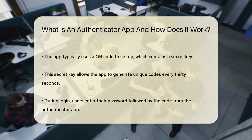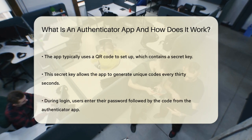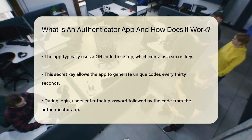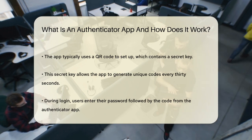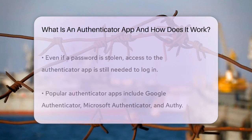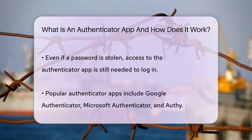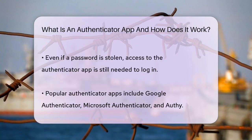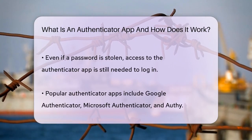When you set up an authenticator app, you typically scan a QR code provided by the service you are trying to secure. This QR code contains a secret key that the app uses to generate the one-time codes. The app will create a new code every 30 seconds based on this key and the current time. When you log into your account after entering your password, you will be prompted to enter the code displayed in your authenticator app.